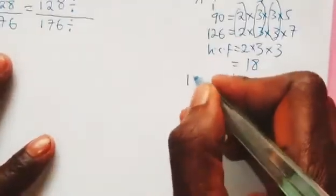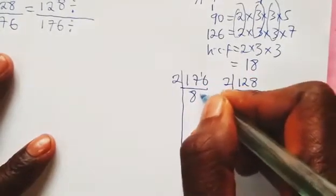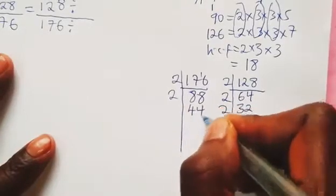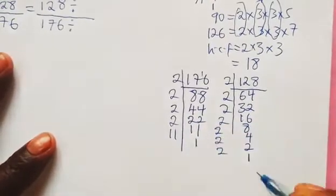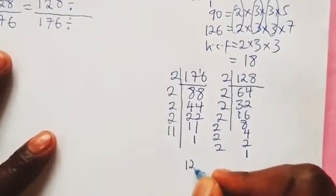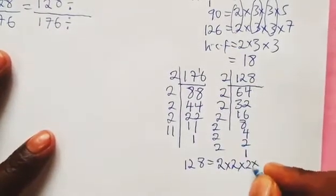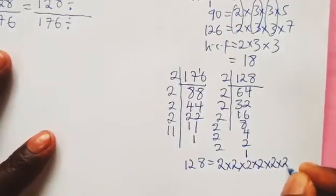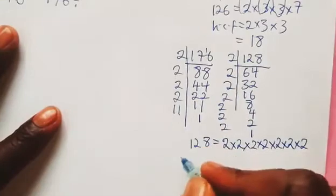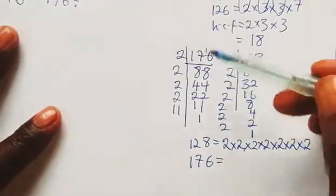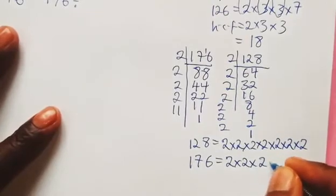Now for 176, we divide by 2: 176 → 88 → 44 → 22 → 11, and then 11 → 1. So 176 = 2 × 2 × 2 × 2 × 11, which is four 2s and one 11. Writing out the prime factorizations: 128 = 2⁷ and 176 = 2⁴ × 11. The common factors are four 2s, so the HCF = 2 × 2 × 2 × 2 = 16.